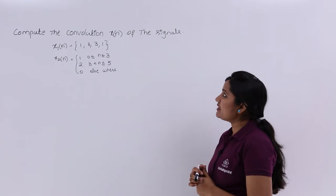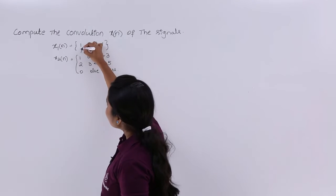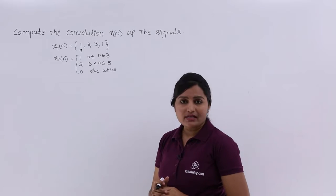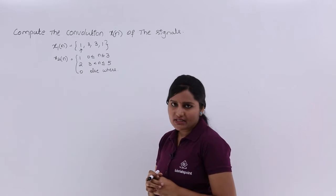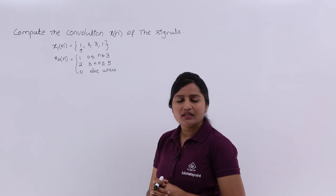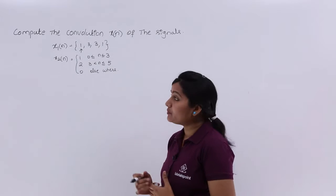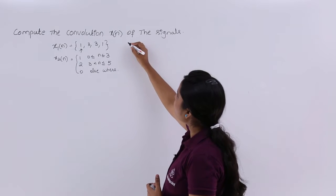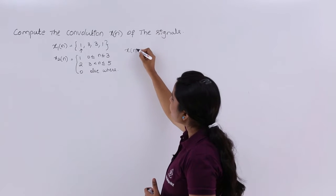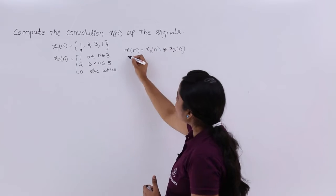Here, compute the convolution X of N of the signal. X1 of N is equal to {1, 3, 3, 1}, with an arrow mark indicating the X[0] term. X2 of N sequence is also given. Without the arrow mark, we can treat the starting one as the X[0] term. They are asking: compute the convolution X of N, which means X[N] equals X1[N] convolved with X2[N].